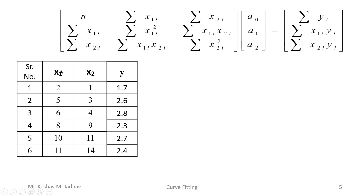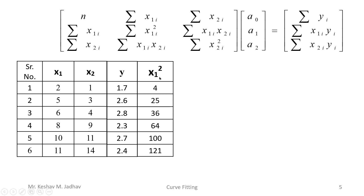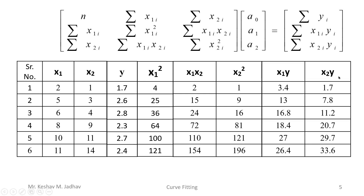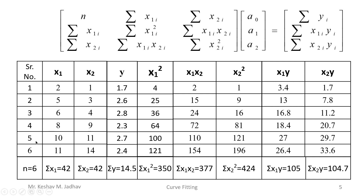The given values are the x1 values, x2 values, and corresponding y values. We then compute x1²: for example 2²=4, 5²=25, and so on. Next we compute x1*x2: for example 2×1=2, 5×3=15, and so on. Similarly x2²: 1²=1, 3²=9, 4²=16, and so on. We also compute columns for x1*y and x2*y. Finally we sum all columns; the total number of data points is n=6.